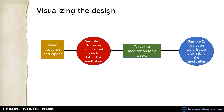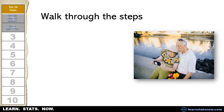Let's visualize the design. We're dealing within subjects here, so the same research participant participates in both samples. In sample one, these are scores on a word list test prior to taking the medication. Then the person takes the medication for two weeks, and in the second sample it's that same person after taking the medication. We're looking for differences in scores on our word list recall — that's the d score. We need to walk through our steps, just like we've done for the one-sample t-test and independent groups t-test, modified for the correlated groups t-test.